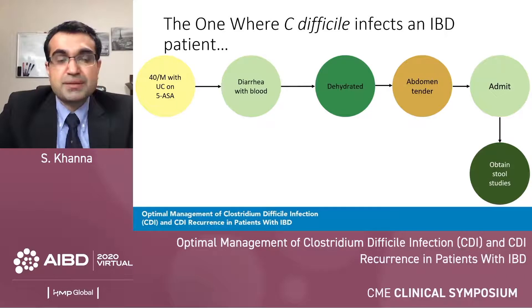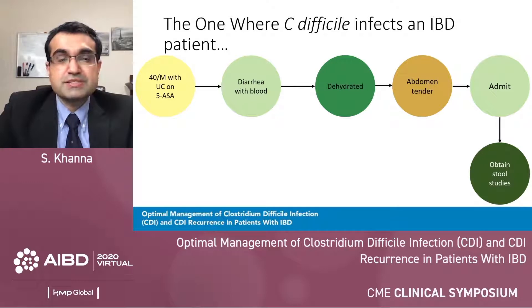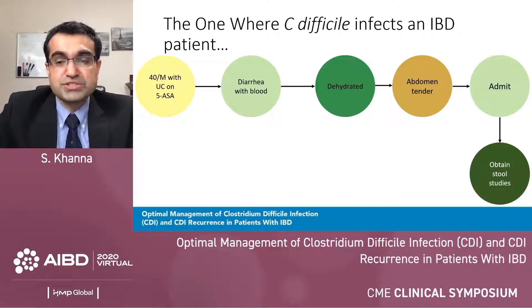We'll start with a patient case to set up the stage. This is a 40-year-old male who has ulcerative colitis and is managed well on a 5-ASA agent. He presents to an emergency room with diarrhea and blood in stool. He's dehydrated, the abdomen is tender, and you make a decision to admit him to the hospital. The next step is to obtain stool studies, thinking about C. diff infection, which most commonly complicates inflammatory bowel disease.